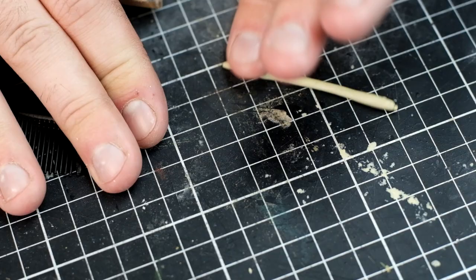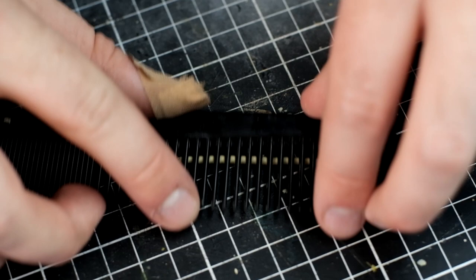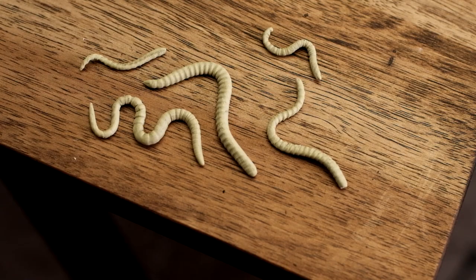My favourite is making gross worms and tentacles. All you've got to do is run a comb over a snake of putty. It helps if the putty is slightly firmer, and the process can be a little bit fiddly and can take a little bit of practice, but even if it's not perfect, sometimes that can be a good thing.